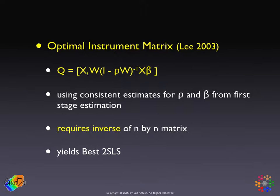The principle goes back to the original idea of the conditional expectation of the spatial lag term and the reduced form, which gives us this inverse. The way we operationalize this process is in a two-step procedure: first we get consistent estimates, then we plug those into the matrix expression, carry out the inverse, and move on to a second two-stage least squares estimation. This result yields so-called best two-stage least squares.